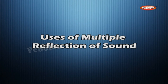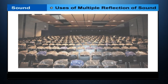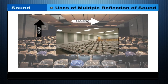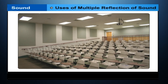Generally, the ceilings of concert halls, conference halls, and cinema halls are curved so that sound after reflection reaches all corners of the hall. Sometimes a curved sound board may be placed behind the stage so that the sound, after reflecting from the sound board, spreads evenly across the width of the hall.